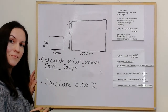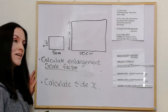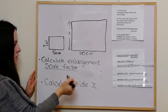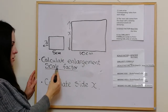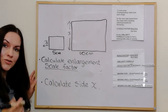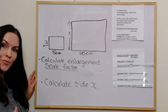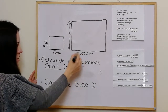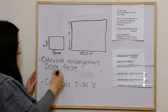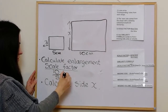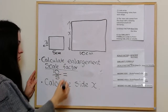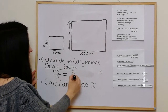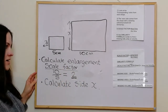Another example: another rectangle. We've got this rectangle here and this rectangle here, and we want to first of all calculate the enlargement scale factor — how much it's enlarged by. We do the new side over the old side, so it's 10 over 5, which simplifies to 2. So that is our enlargement scale factor.